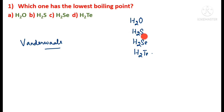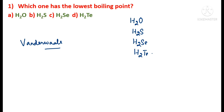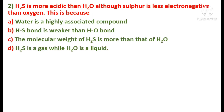As we move down the group, the boiling point increases because of stronger van der Waals forces. So H₂S will have the lowest boiling point when compared to H₂O, H₂Se, or H₂Te. The correct answer is option B — H₂S. Next question: H₂S is more acidic than H₂O although sulfur is less electronegative than oxygen — why?